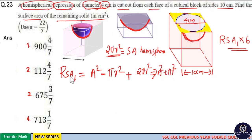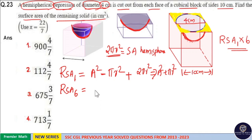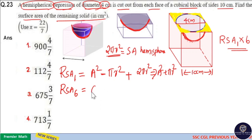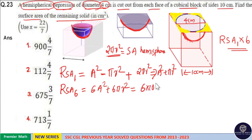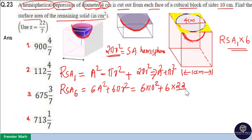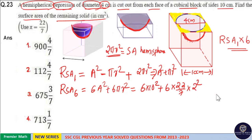This is the surface area of 1 face. Since there are 6 faces total, the remaining surface area of the whole cuboid is 6 into (a² + πr²), which equals 6a² + 6πr². Here a is equal to 10 centimeter, so 6 into 10² plus 6 into π (which is 22/7) into r². Since diameter equals 4 centimeter, r equals 2 centimeter, so r² equals 4.